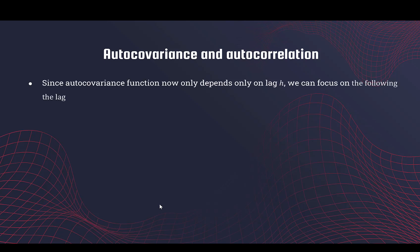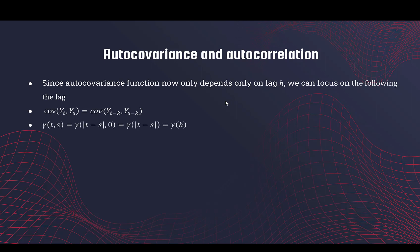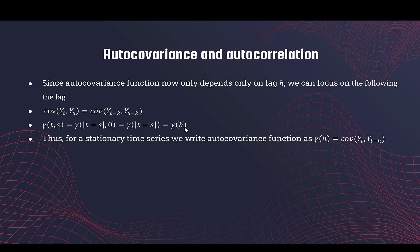To summarize: for stationary processes, even weakly stationary ones, the autocovariance depends only on the lag, so we focus only on the lag. Instead of referring to the autocovariance by two time points, we refer to it by the distance between the two time points. The variance of yt is the covariance of yt with itself — that is, the lag is zero — so we write this as gamma(0). The autocorrelation function similarly depends only on the lag.